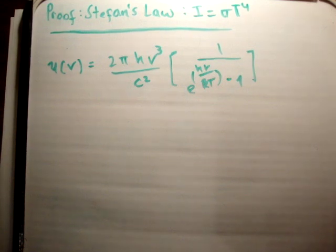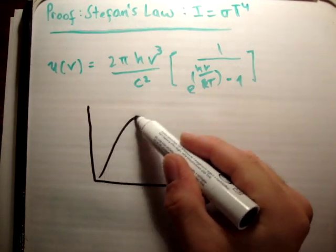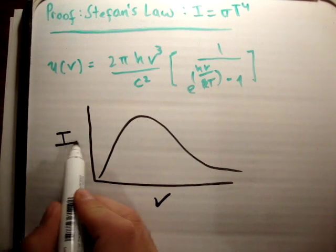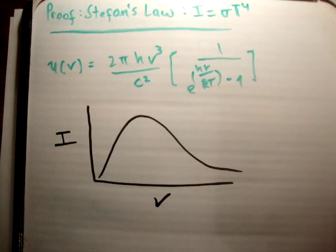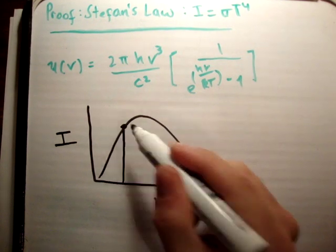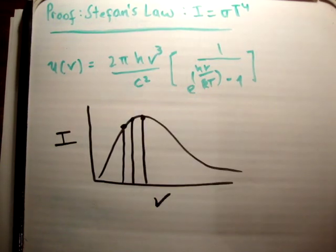In order to get all the possible levels of frequency, what we need to do is integrate this across all the frequency values. Of course, what we're going to get is a blackbody spectrum, which looks like this, with frequency on the x-axis and intensity on the y-axis.